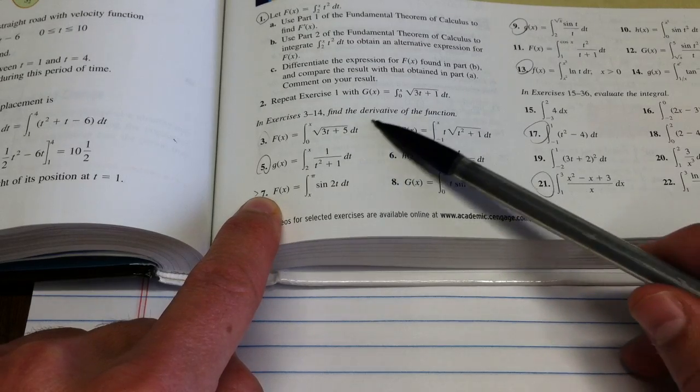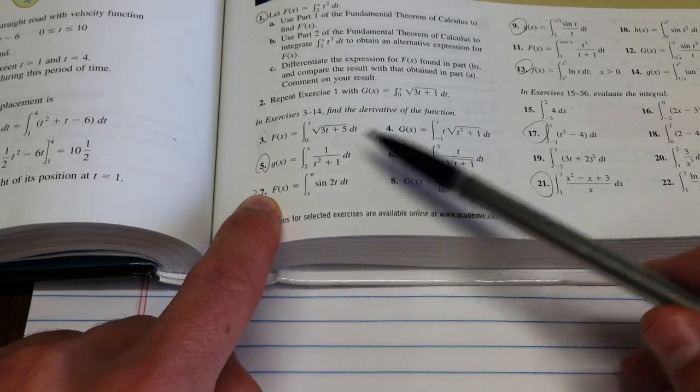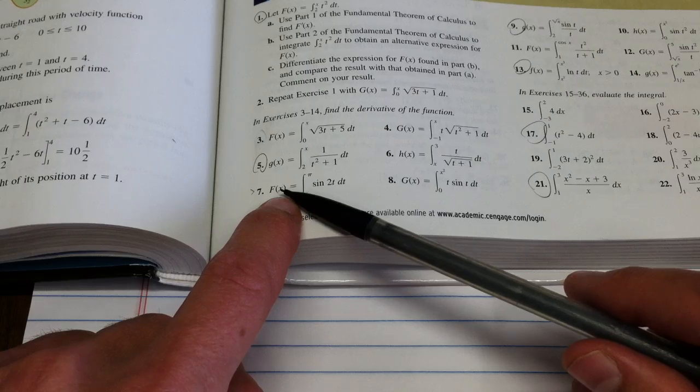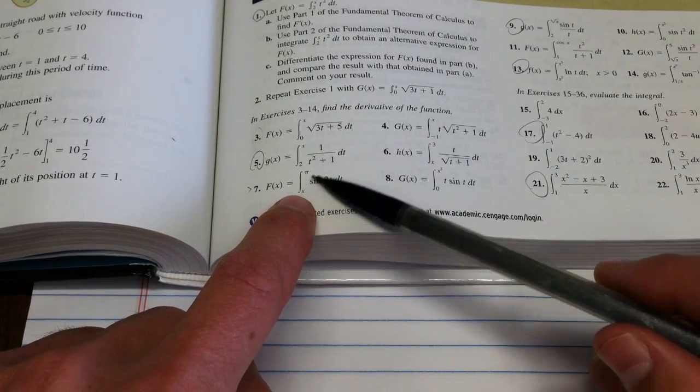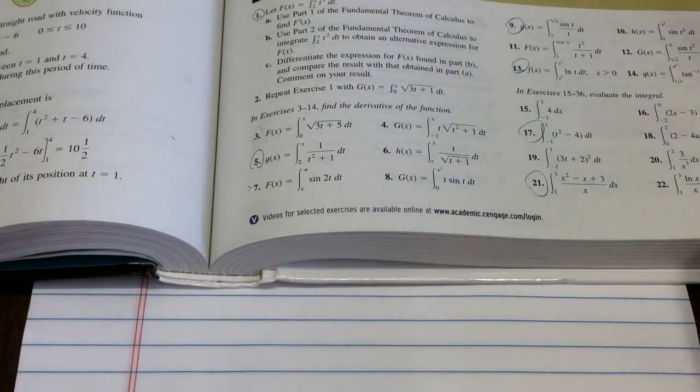It says find the derivative of the function. Find the derivative in our case of f of x, which is the integral from x to pi of sine 2t dt.